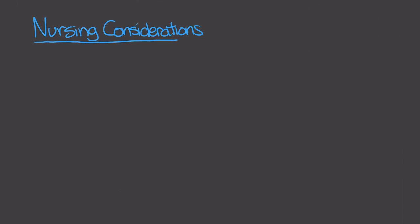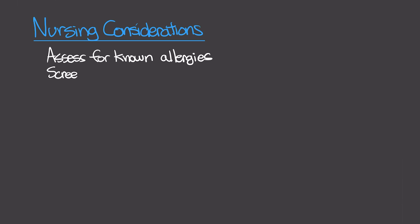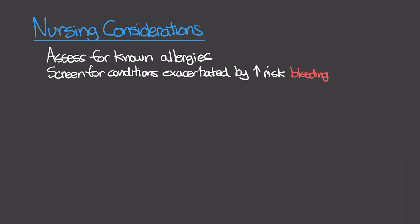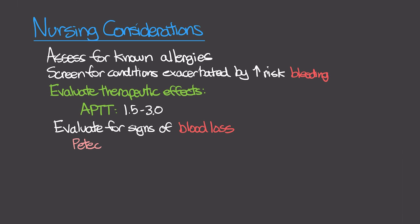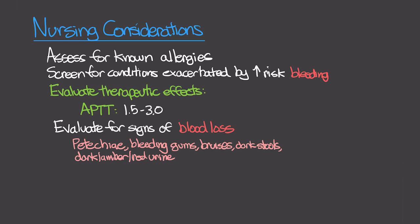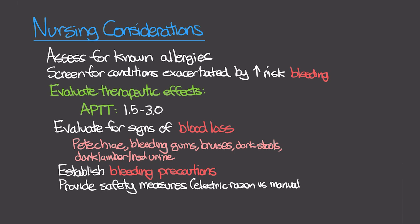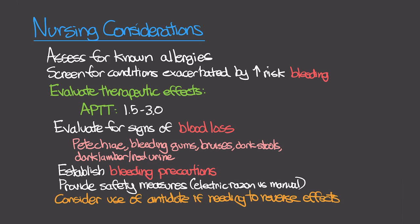For nursing considerations with a patient on heparin: assess for known allergies and screen for conditions that could be exacerbated by increased bleeding risk. Evaluate therapeutic effects by checking activated partial thromboplastin time (aPTT), with a goal of 1.3 to 3 times the control value. Monitor for regular signs of blood loss including petechiae, bleeding gums, bruising, dark-colored stools, and dark-colored urine — notify the provider if these occur. Establish bleeding precautions and provide safety measures such as using an electric razor rather than a manual razor to reduce bleeding risk.